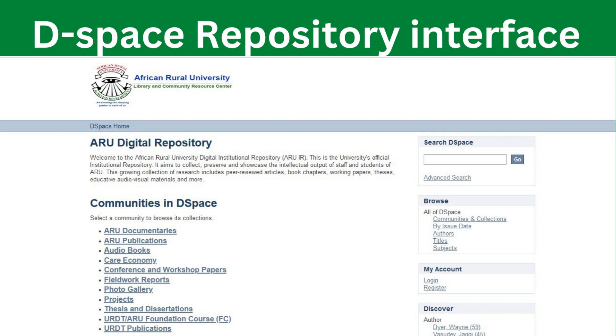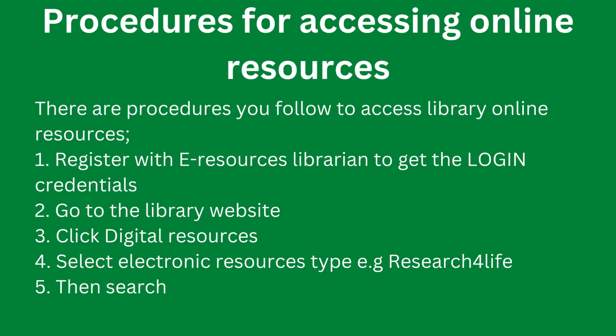There are procedures you follow to access the library online resources. First, you register with the e-resources librarian to get the login credentials. Since this presentation is for the public, we couldn't indicate the login credentials here. Once you've registered, you go to the library website, click on digital resources, and you can access any resource you want — Research for Life, TEEAL, PDF Drive — and search for anything you want and download a PDF for your future reference.